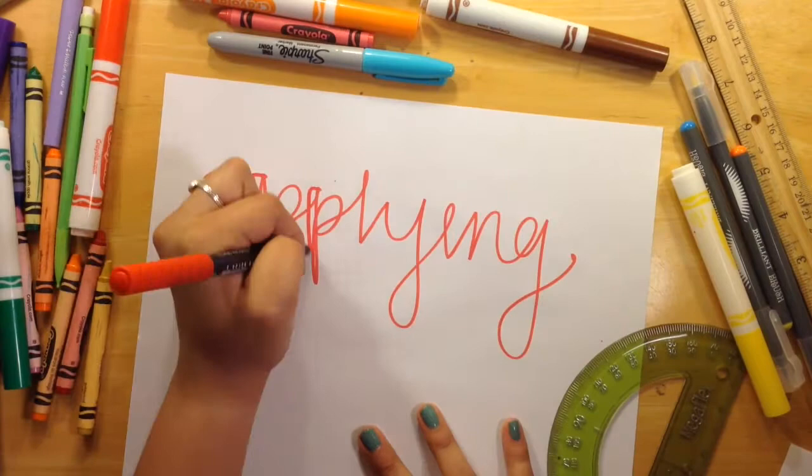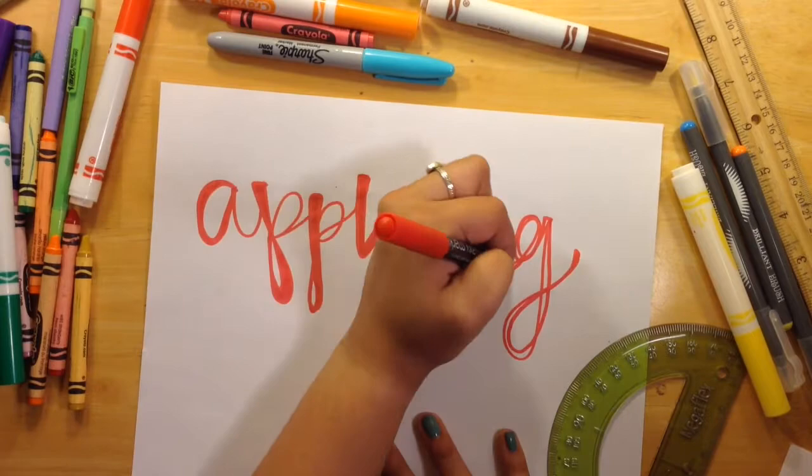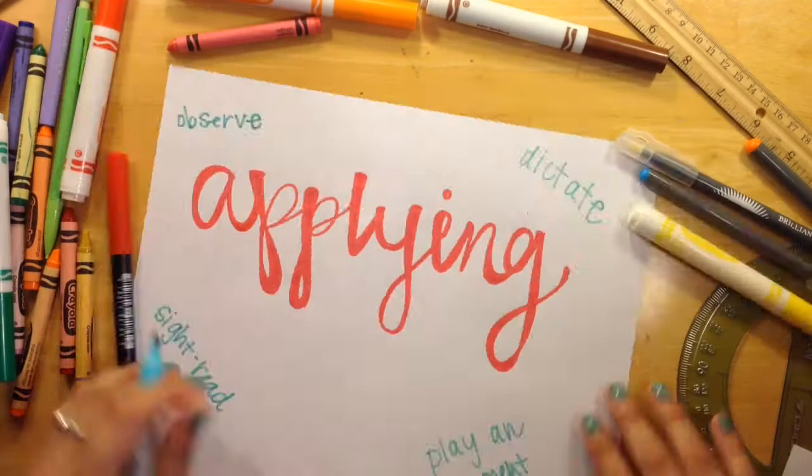A step up from understanding is applying. We found that this is where a music student applies what they learned in the music classroom to a real-life situation. This can include using the music skills they learned previously to sing or play an instrument, practice their instrument at home, participate with an ensemble, and more.